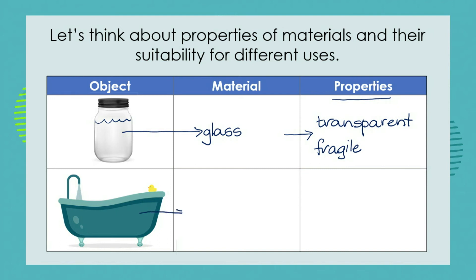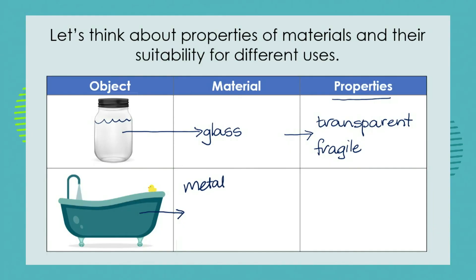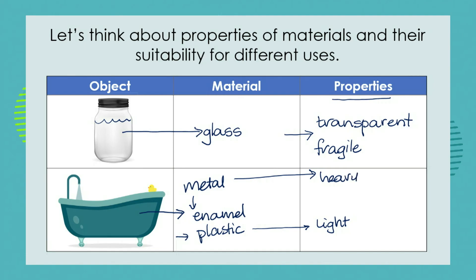What about our bath? Long ago, baths were made of metal. Later, baths were made out of a ceramic covered with enamel. And today you even get plastic baths. If a bath is plastic, it's going to be lightweight; if it's metal, it's going to be very heavy. But a metal bath is going to be more durable and last longer than a plastic bath. We have to consider very carefully the material we're using to manufacture objects and make sure it's suited in terms of its characteristics for the use it is going to have.